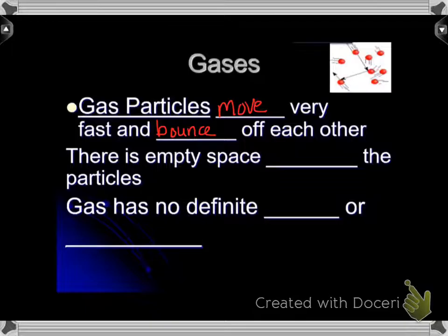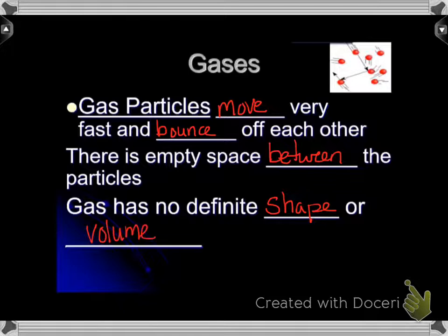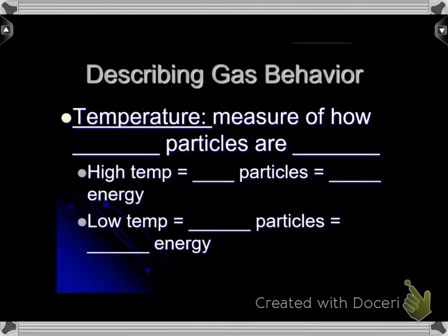Now we're talking about gases. Gas particles move very fast and bounce off each other. There is empty space between the particles. Gas has no definite shape or volume. Gases are invisible, you can't see them. They're moving at a high rate of speed, they're bouncing off each other, and there's no real way to catch them or to take their shape or volume without other tools.